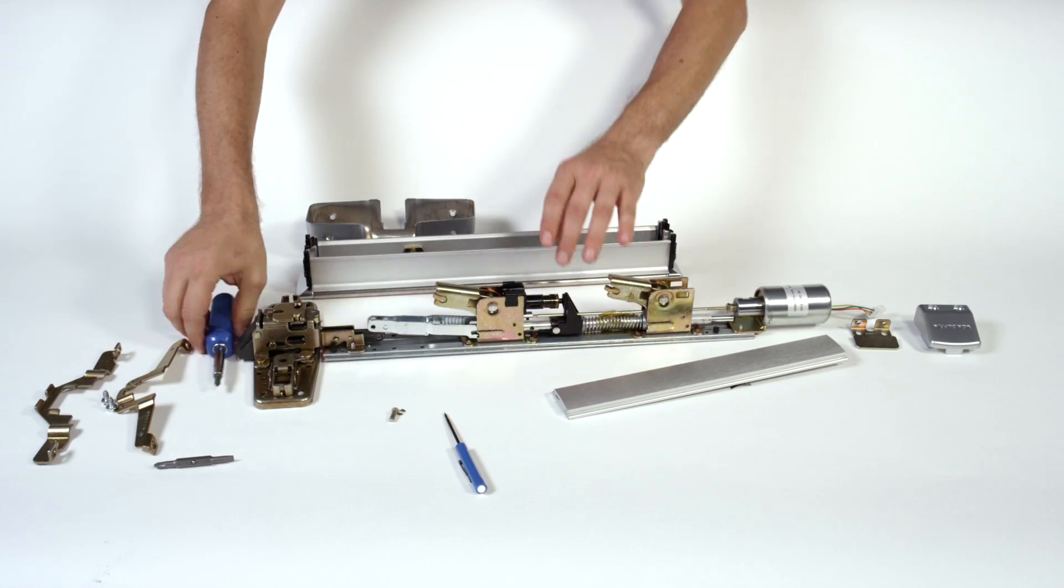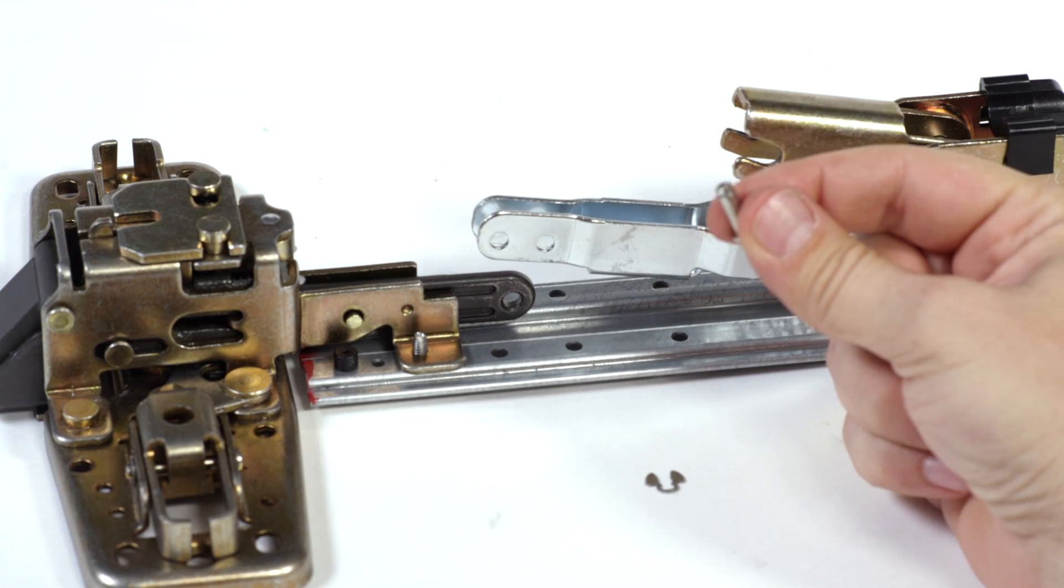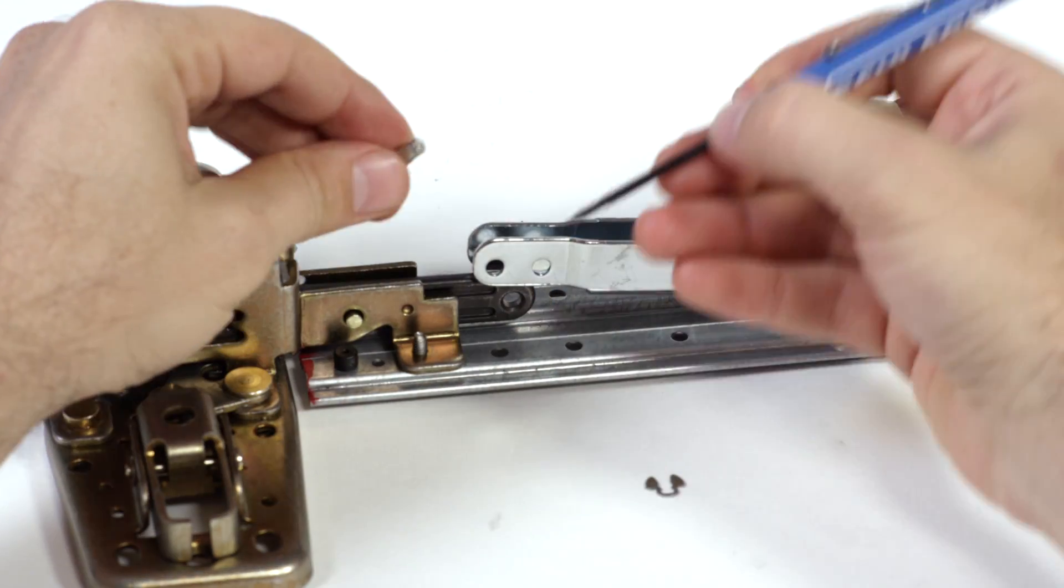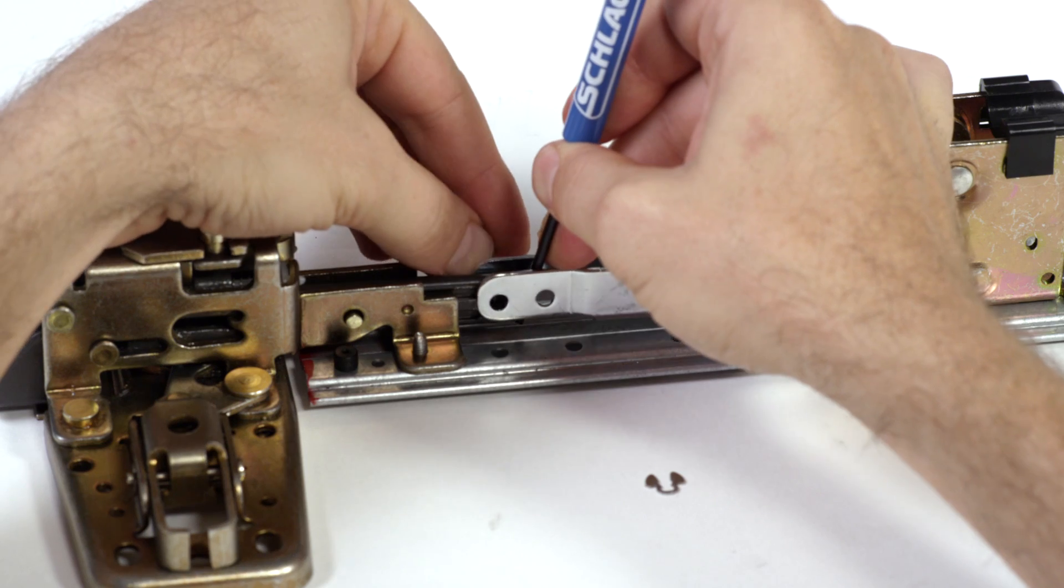Next, we have to connect the main link using the link pin. Pay special attention to where the link pin is installed, in the first hole of the main link. If installed in the second, your latch will stay half retracted all the time.